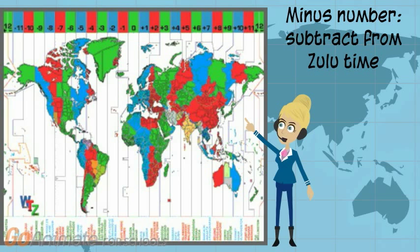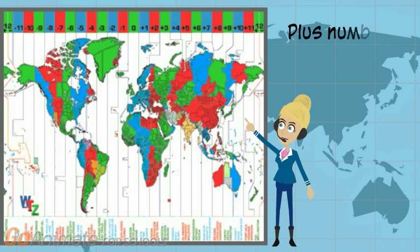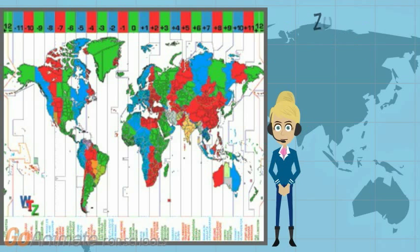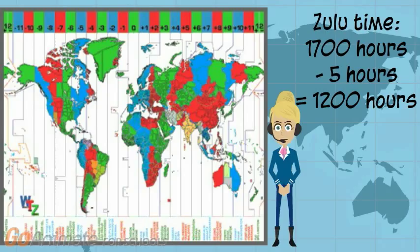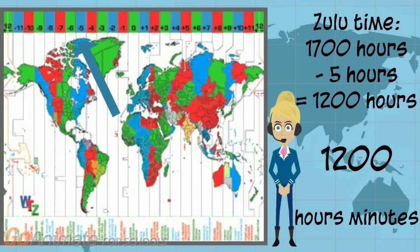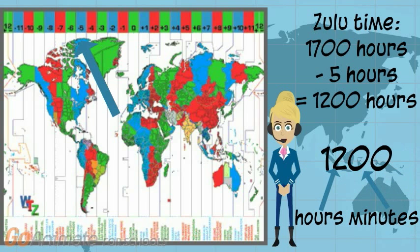If your local time zone is a minus number, you subtract that number from Zulu time to get your local time. If your local time zone is a plus number, you add that number to Zulu time to get your local time. So if it is 1700 hours Zulu time and you are in the minus 5 time zone, which is the eastern time zone, your local time is 1200 hours, or noon. Remember, the first two numbers in the 24-hour clock are the hours, and the last two numbers are the minutes. When we add or subtract our conversion number, it is only from the hours. The last two numbers for the minutes will always remain the same when converting local time to Zulu time.